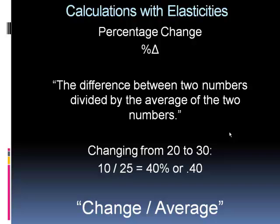20 plus 30 is 50. 50 divided by two is 25. And so we would say in economics that the percentage change here is 10 divided by 25, which is a 40% change or .40. What we want to remember as we're doing these percentage changes is you take the change divided by the average. Keep that in mind as we go along.